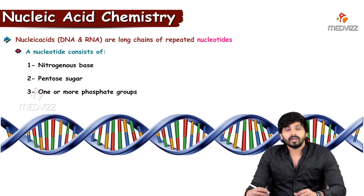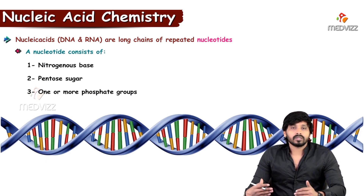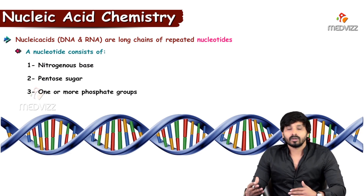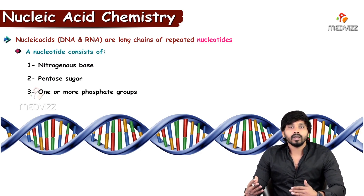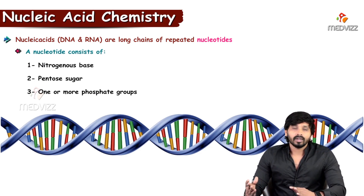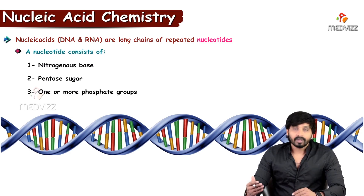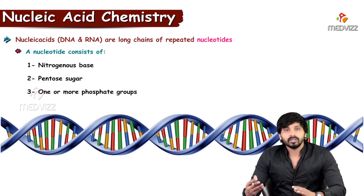Before going into detail about nucleic acids, it is mandatory to know about nucleotides. What are nucleotides? Like we have studied in carbohydrates, lipids, and proteins — the basic monomer units which make the polymer units. For example, for carbohydrates, monosaccharide units are the monomer units to make a complex carbohydrate. Similarly, for proteins, amino acids are the monomer units to make a polymer of peptide and then protein. Similarly, for nucleic acids, we have nucleotides. They are the basic units for nucleic acids.